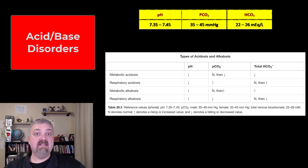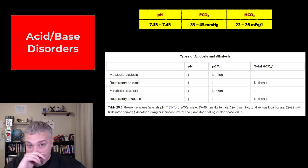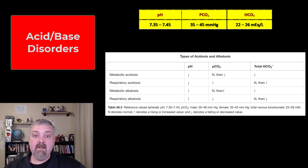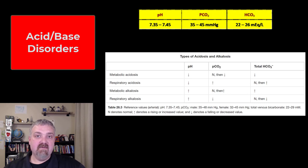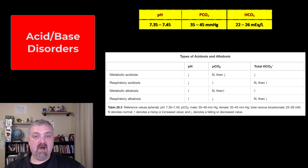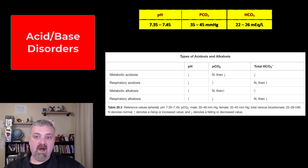The normal pH of your blood is 7.35 to 7.45. If the pH drops below 7.35, you will have an acidosis condition — it's really acidemia, but the physiological condition is called acidosis. If the pH climbs above 7.45, you will have an alkalosis condition. The other key players are going to be your partial pressure of carbon dioxide, PCO2, which normally should be 35 to 45 millimeters of mercury, and then HCO3 or bicarbonate should normally be 22 to 26.